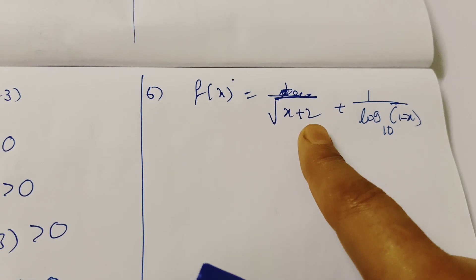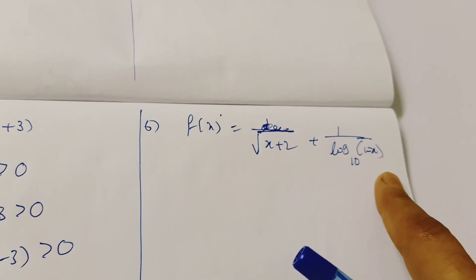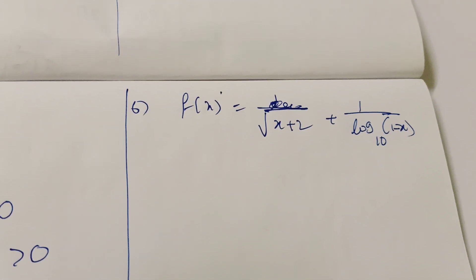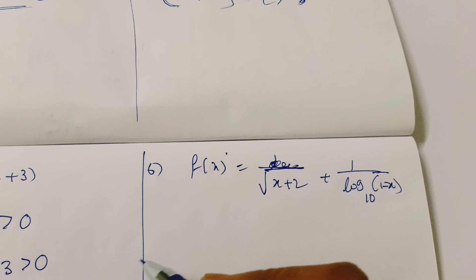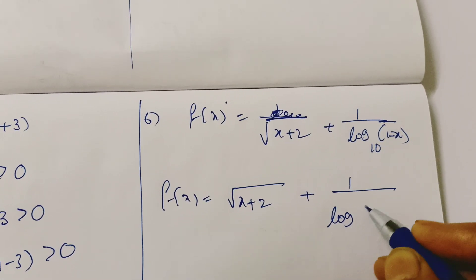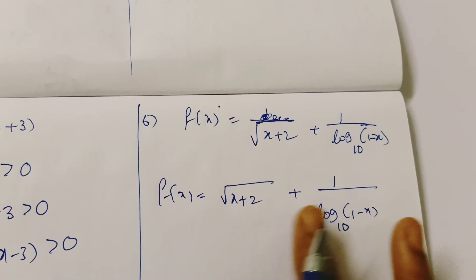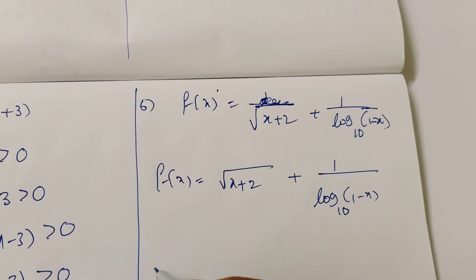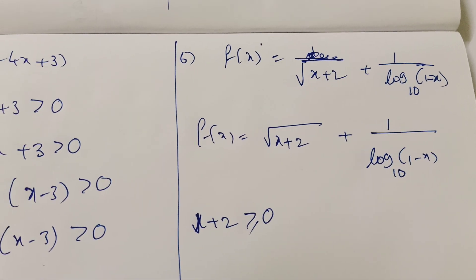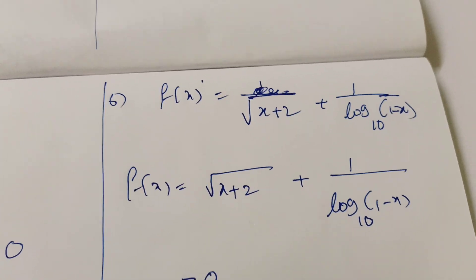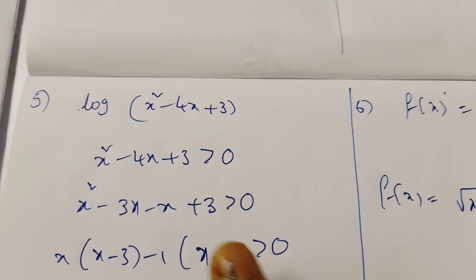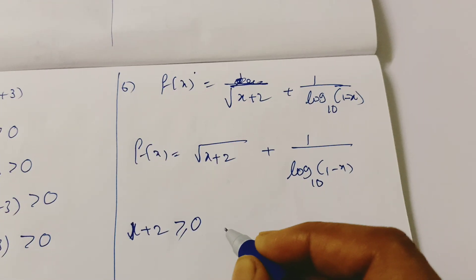The next problem: f(x) = 1 by root of (x plus 2) plus 1 by log base 10 of (1 minus x). Every function here is a real-valued function. We split into two separate conditions. First, from root of (x plus 2): since it's a square root, x plus 2 must be greater than or equal to 0, so x is greater than or equal to minus 2. Second, the log condition: the argument (1 minus x) must be greater than 0.